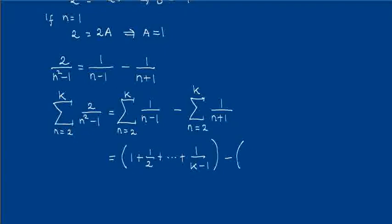And we do the same for the second summation. We start with n equals 2, so when n equals 2 we have 1 over 3.